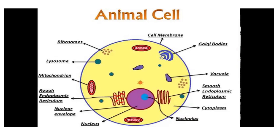Now, this is an animal cell. It has a cell membrane, Golgi body, and small vacuoles — in contrast to plants which have a large vacuole. It also has smooth endoplasmic reticulum, cytoplasm, nucleus, nucleolus, nuclear envelope, rough endoplasmic reticulum, mitochondria, lysosomes, and ribosomes.